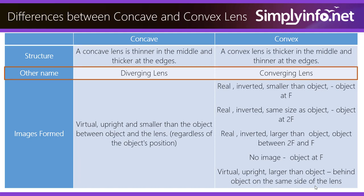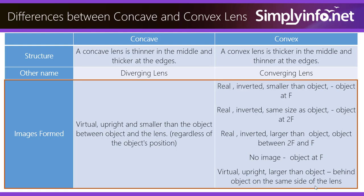Other names: concave is called a diverging lens, convex is a converging lens. For concave, the image formed is virtual, upright, and smaller than the object, located between the object and the lens, regardless of the object's position.